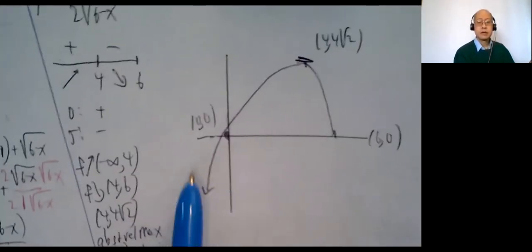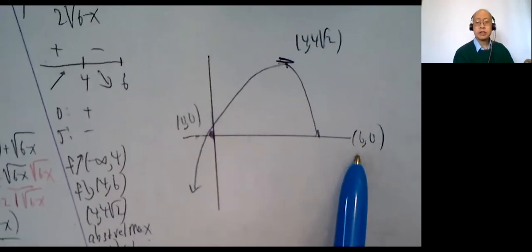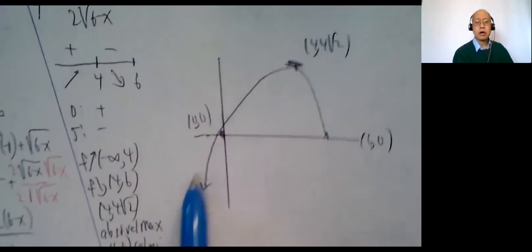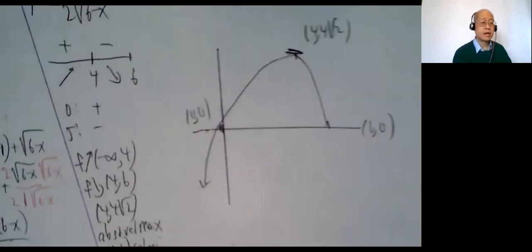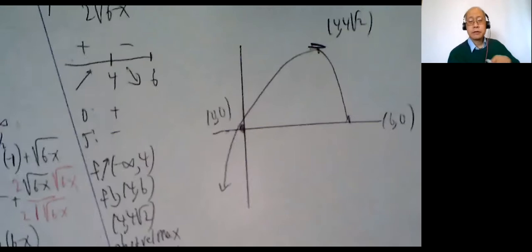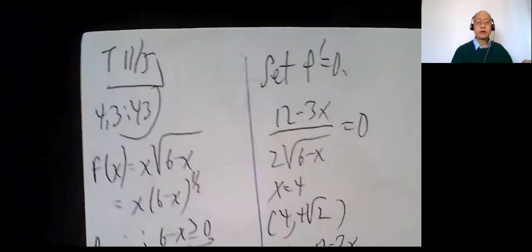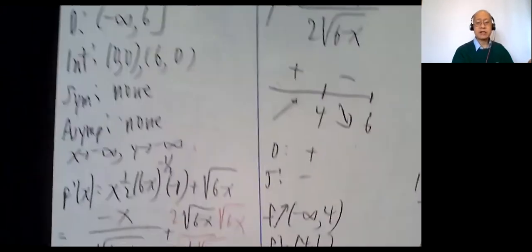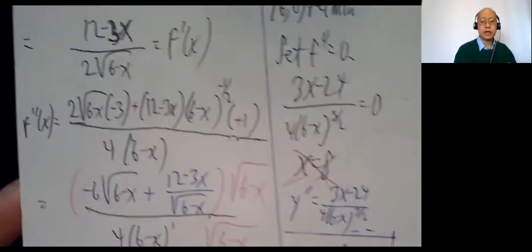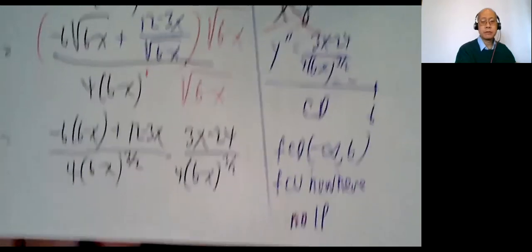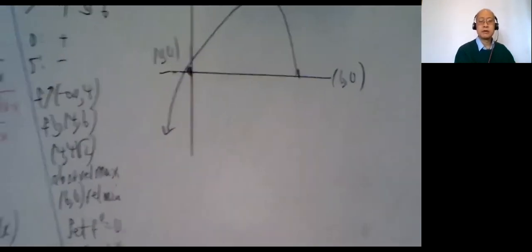So here's the graph: intercepts at (0, 0) and (6, 0), maximum at (4, 4√2), always concave down, and a local minimum at (6, 0). That's quite involved. I realize some of you are saying you can't do this kind of problem in one hour — so on a test I'll either give you an easy enough problem to do the whole thing, or just have you do a portion of it.